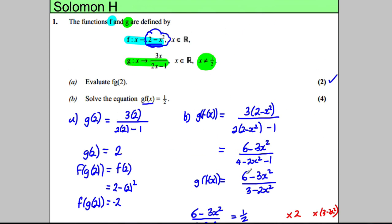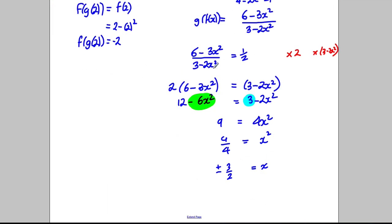Now looking up, am I allowed those answers? x is allowed to be anything as long as it's not a half. So my two answers here are x equals positive 3 over 2 or x equals negative 3 over 2, and I'm done.